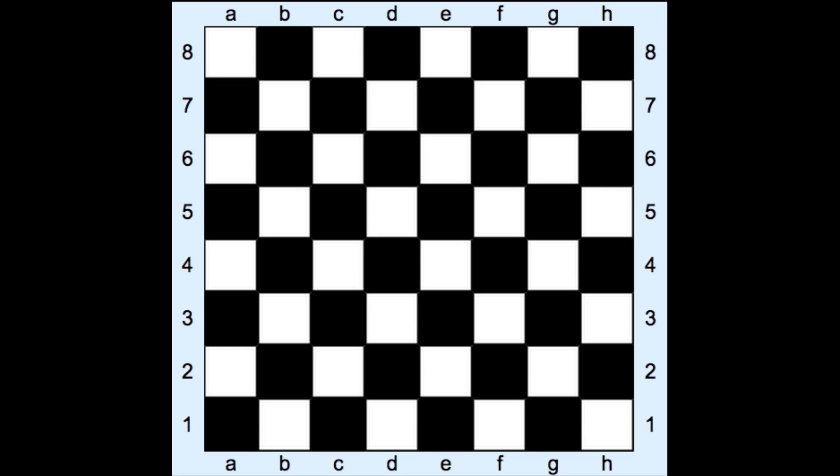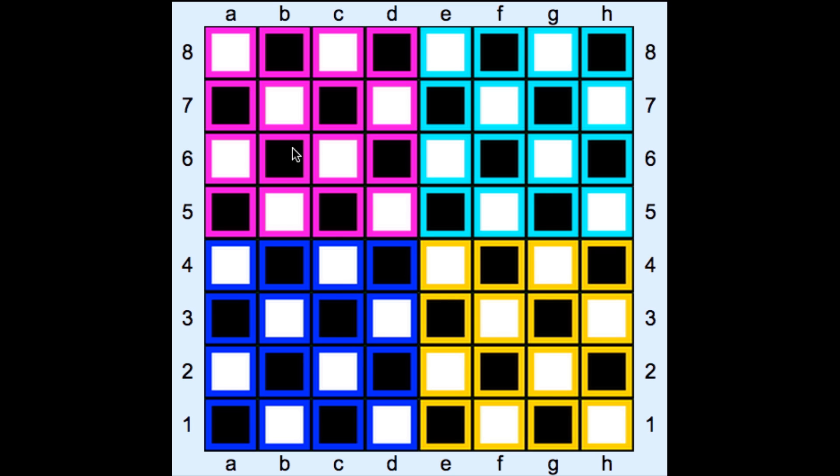Okay, so it's important to visualize the board broken up into four quadrants, four groups of sixteen squares. And within each of these quadrants, we have four systems to be familiar with.